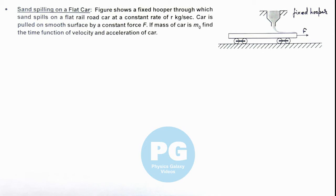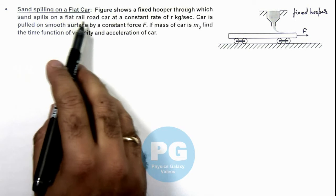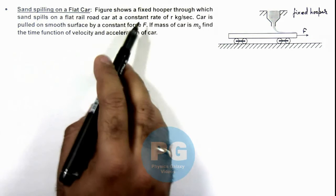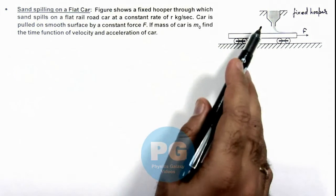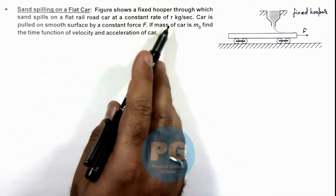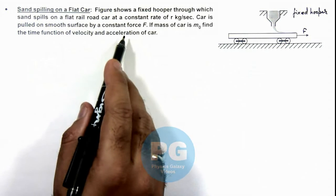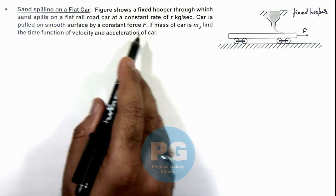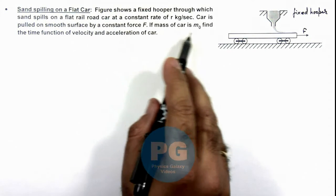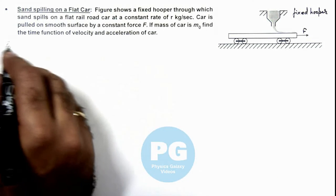In this illustration, we'll analyze a case of sand spilling on a flat car. The figure shows a fixed hopper through which sand spills on a flat railroad car at a constant rate of r kilogram per second. The car is pulled on a smooth surface by a constant force F. If car mass is m₀, we are required to find the time function of velocity and acceleration of car.